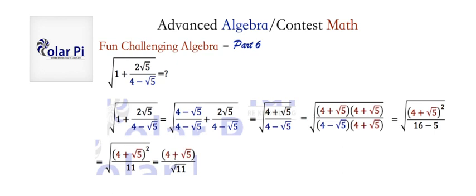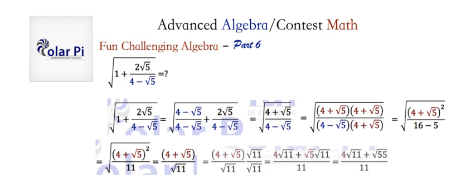by multiplying this very last fraction we have by root 11 numerator and denominator. When we do that, it's a little bit of work, but in the numerator, we have to distribute the root 11. So we get 4 root 11 and then plus root 5 times root 11. And then the denominator,